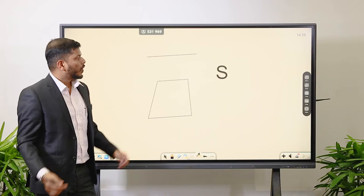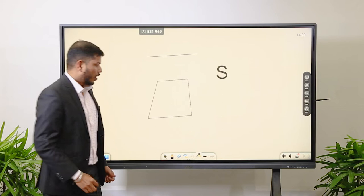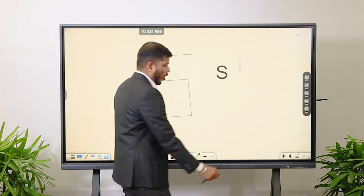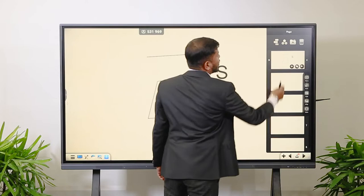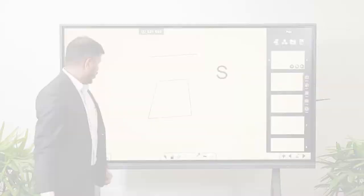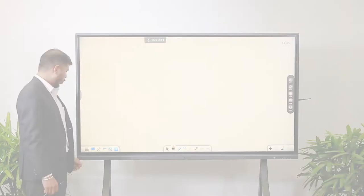Writing in my handwriting gets automatically converted to system form — that is the automatic hand recognition feature. There is also an undo and redo option. We can have multiple pages; I can add any number of pages and go back to any page where I was writing.